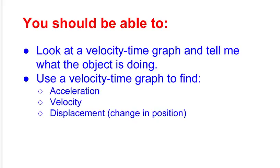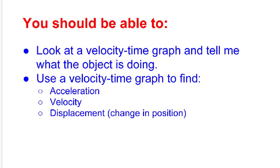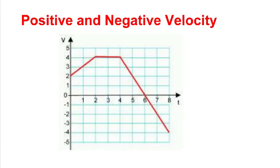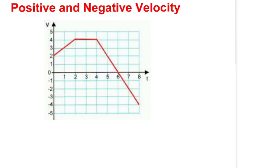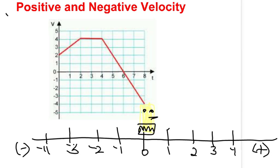The first thing we have to talk about is positive and negative velocity. I want you to think back to Spongebob. I'm going to make you a Spongebob, and I want you to think about what kind of movement he would have to do to make this graph. At the beginning, we can see that he's moving at a speed of 2 meters per second. In general, we usually make positive to the right, so he's moving 2 meters per second to the right. He's speeding up for a while, right here he's speeding up.